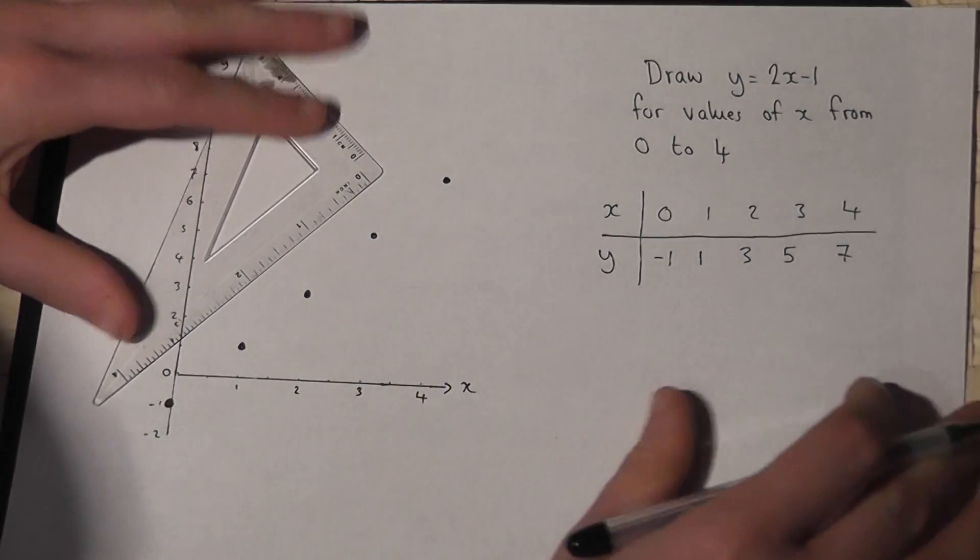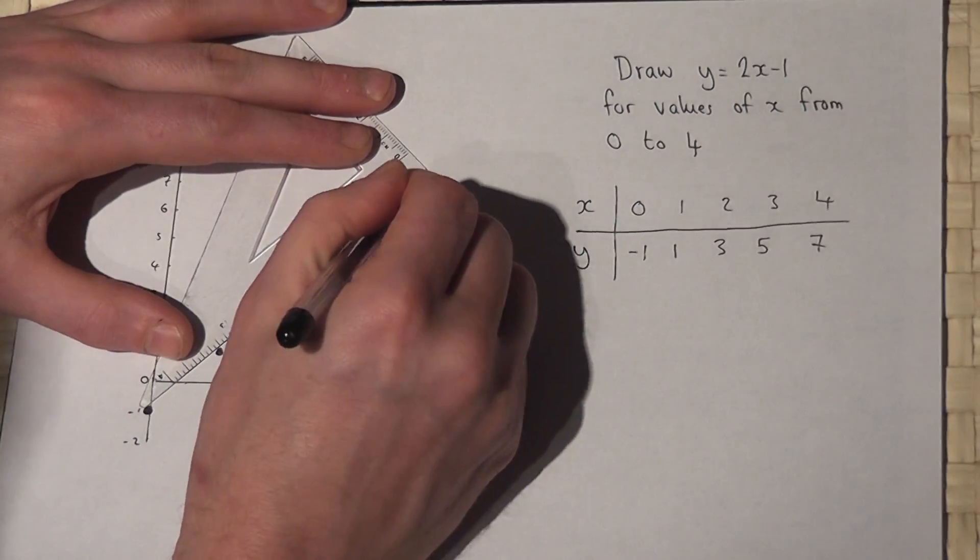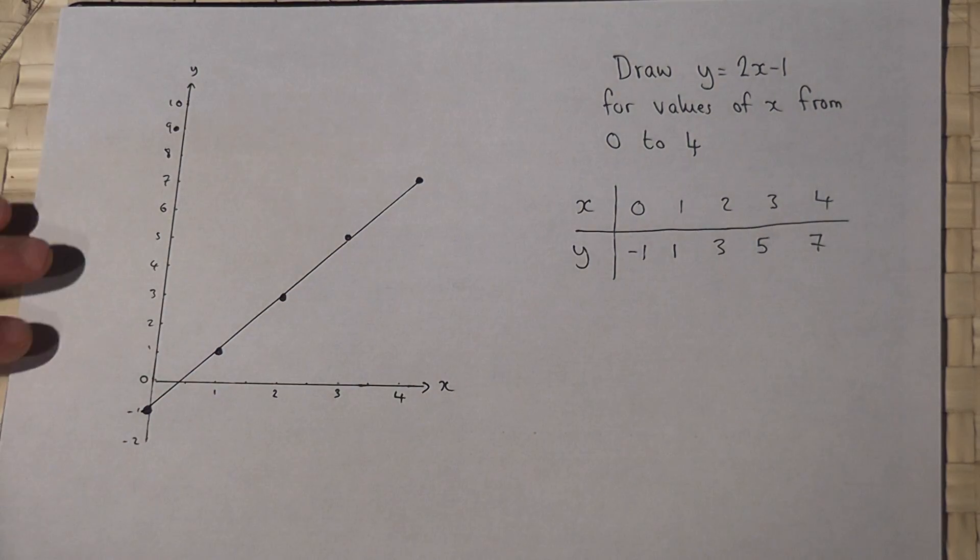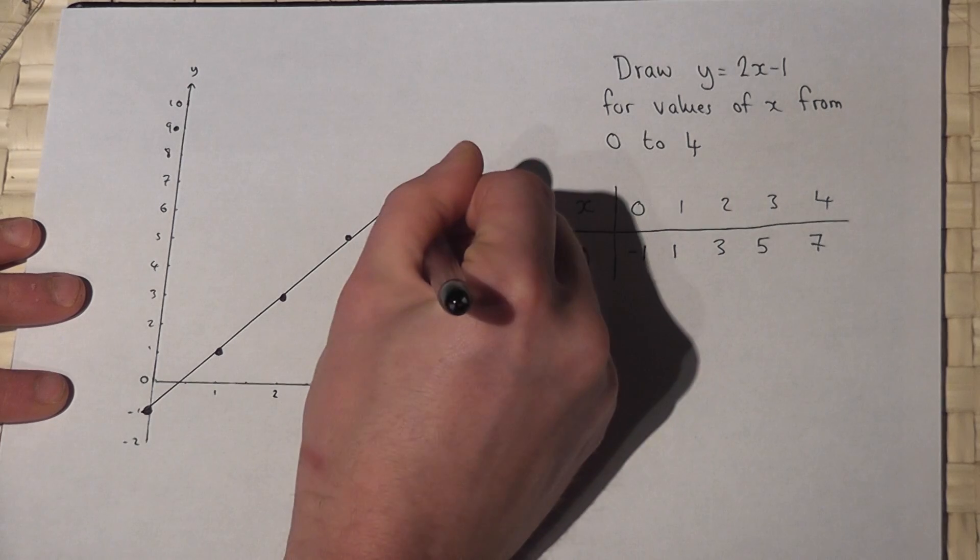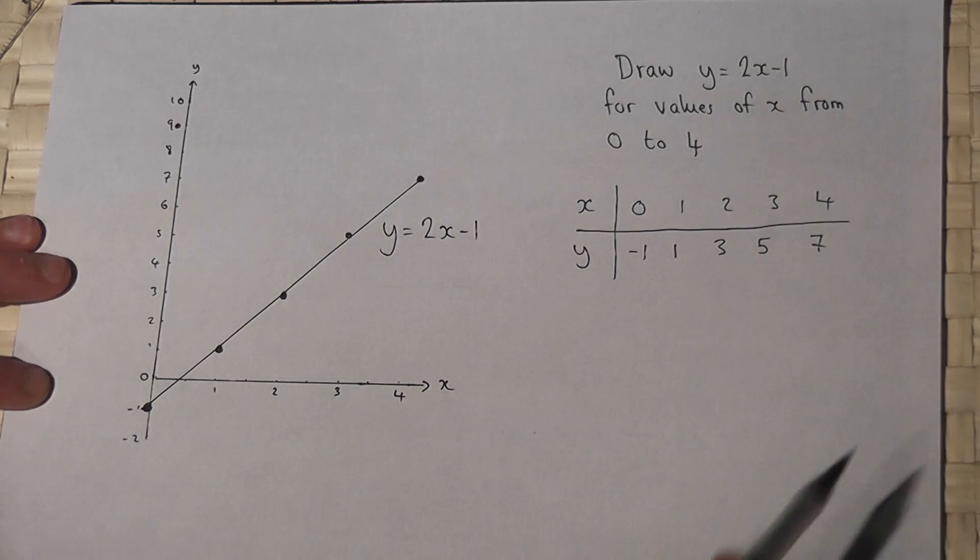I then draw a line through those coordinates, which I extend right the way through. And there we go. This is the line y equals 2x minus 1 for x from 0 to 4.